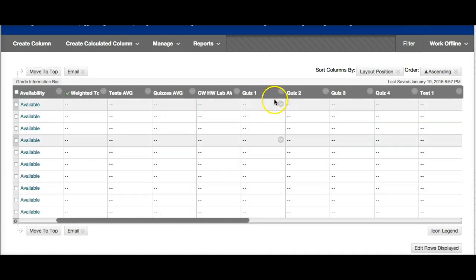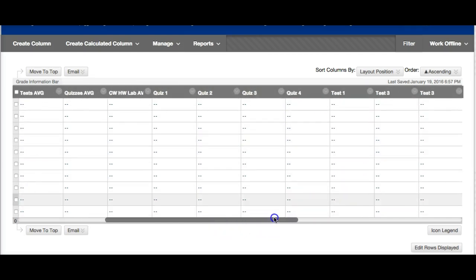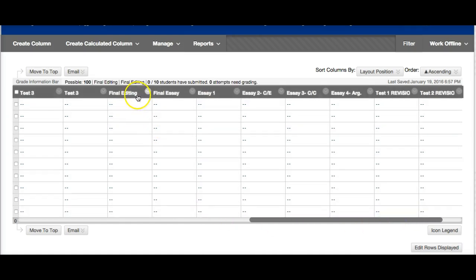I've set up all my items in my grade book. So you can see I've got quizzes, four quizzes. I scroll over. I have three tests. Here are my final editing, final essay. Here are homework assignments: Essay 1, essay 2, essay 3, essay 4. Some more homework assignments. So here's my grade book all set up, just ready for me to enter grades.